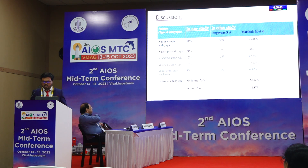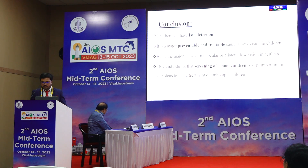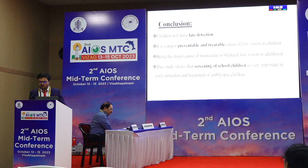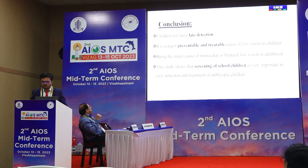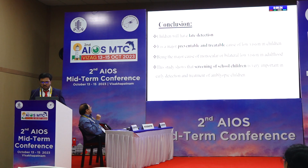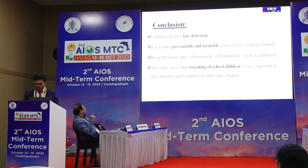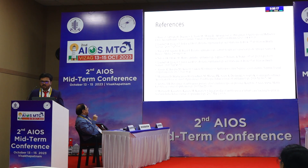Discussion: anisometropic amblyopia in our study accounted for 44% of cases and ametropic amblyopia for 24% of cases. Conclusion: children will have late detection, and amblyopia is a major preventable and treatable cause of low vision in children, being a major cause of monocular and bilateral low vision in adulthood. This study shows that screening of children is very important for early detection and treatment. Thank you.